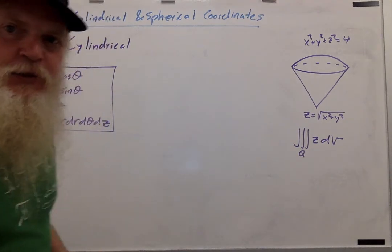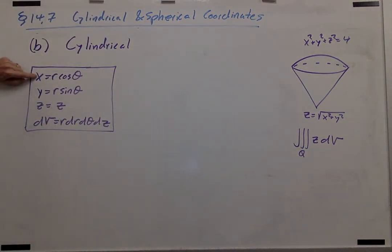We're going to work in cylindrical coordinates. It helps to remember that in cylindrical coordinates, x is r cosine theta, y is r sine theta, z equals z, and dV is r dr dtheta dz.